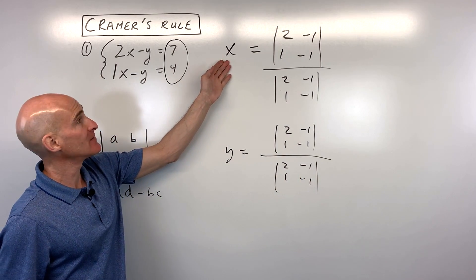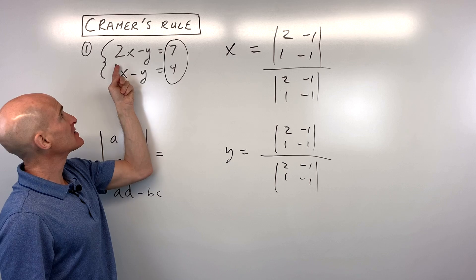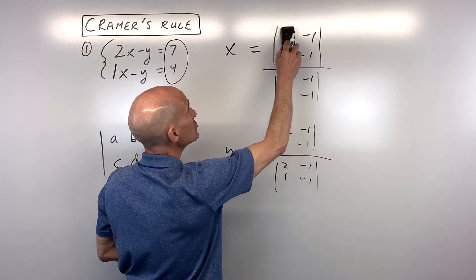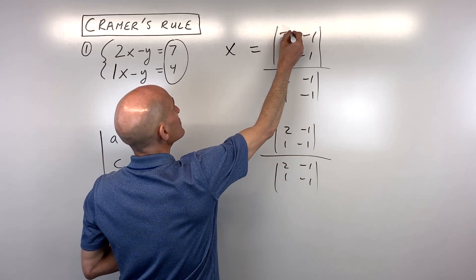Now, when you're solving for x, what you want to do is replace the coefficients in front of x with the solution. So I'm going to erase the 2 and the 1 and replace it with 7 and 4.